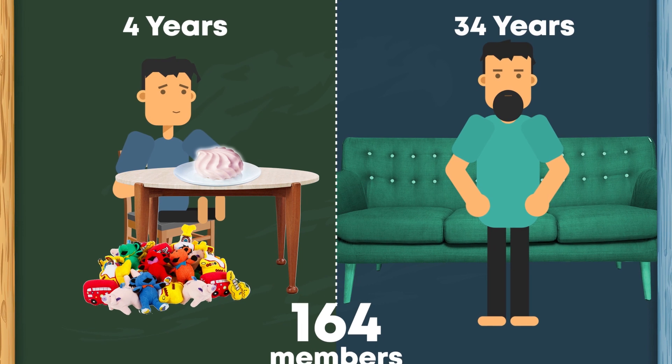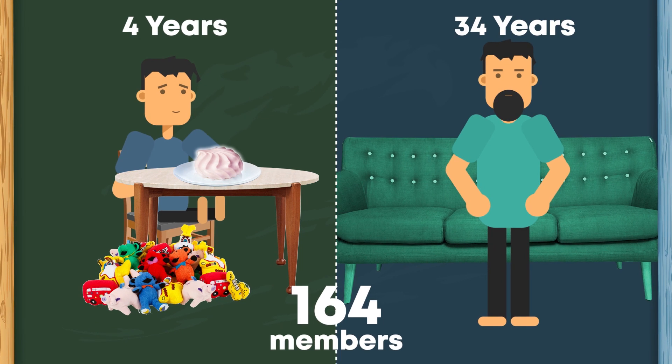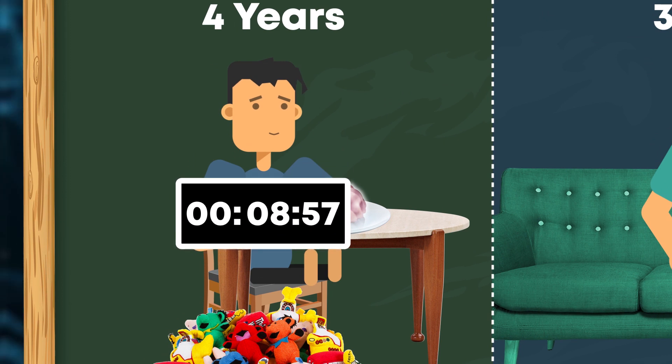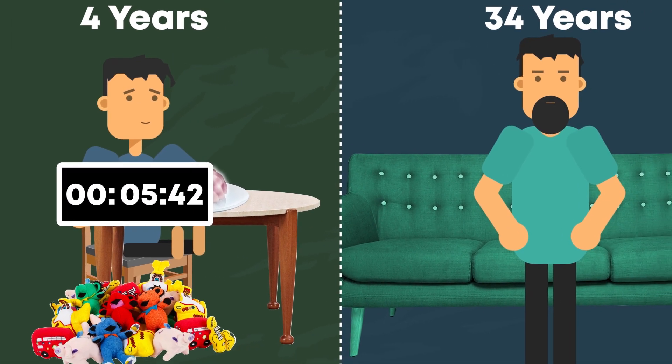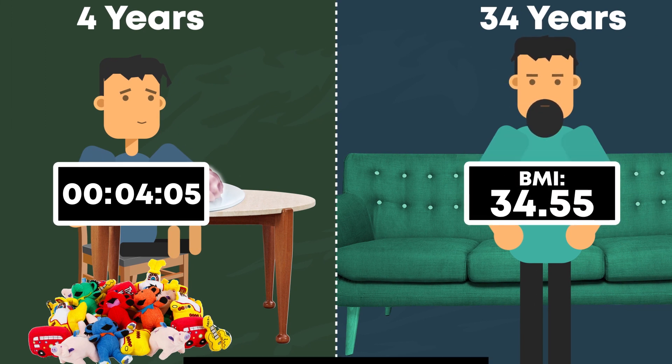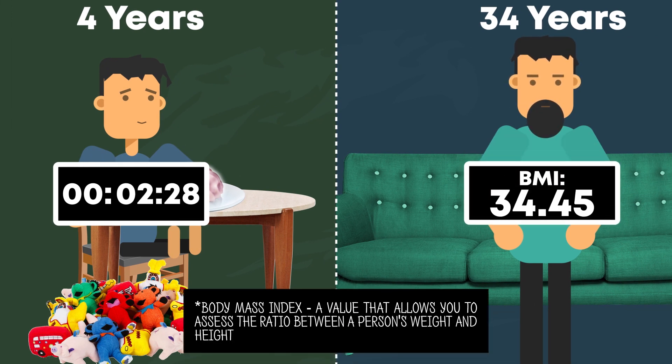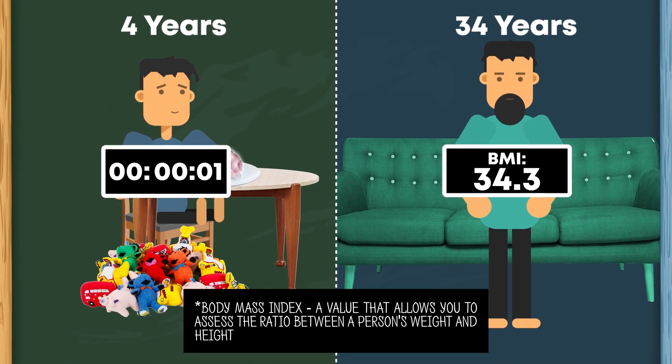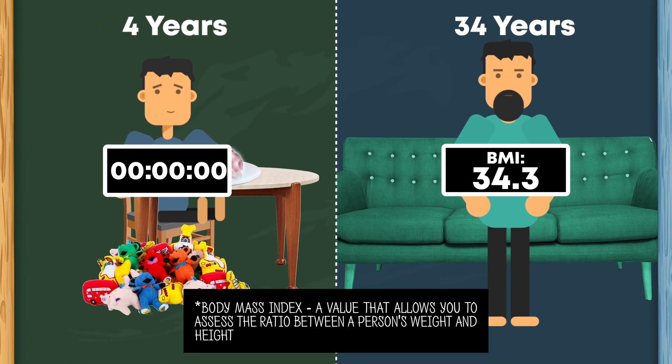Having analyzed 164 participants of the experiment, Mischel's group came to the conclusion that every additional minute for which the child managed to resist the temptation almost predicted that their body mass index would be lower by 0.2% when they grow up. Amazingly, those were the conclusions that the scientists had made.